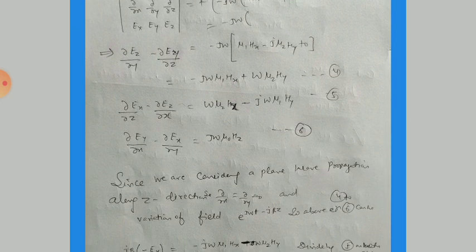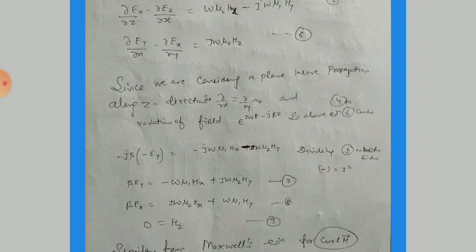Similarly for the second component: ∂Ex/∂z − ∂Ez/∂x = ωμ₂·hx − jωμ₁·hy. And lastly: ∂Ey/∂x − ∂Ex/∂y = jωμ₀·hz. Here we consider that the wave propagates along the z direction, so variations along x and y are zero: ∂/∂x = 0 and ∂/∂y = 0.